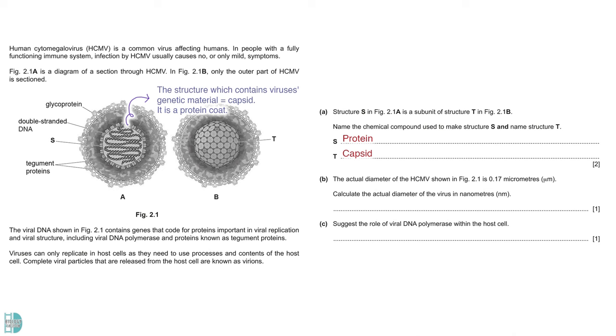In part B, you have to calculate the actual diameter of the virus in nanometer. To convert micrometer to nanometer, multiply the value with 1000. You will get 170 nanometer.